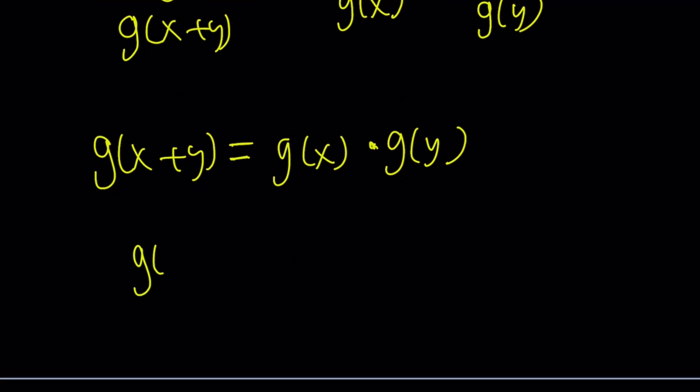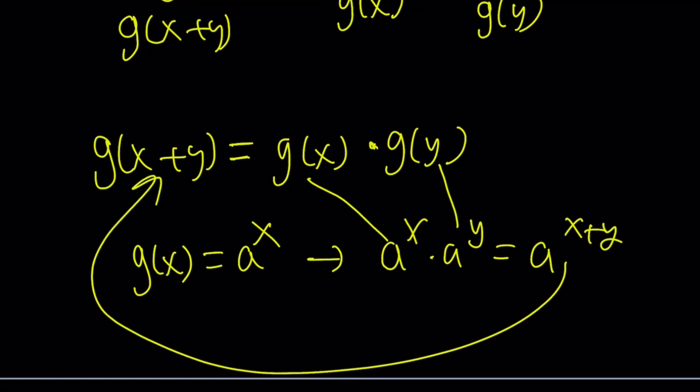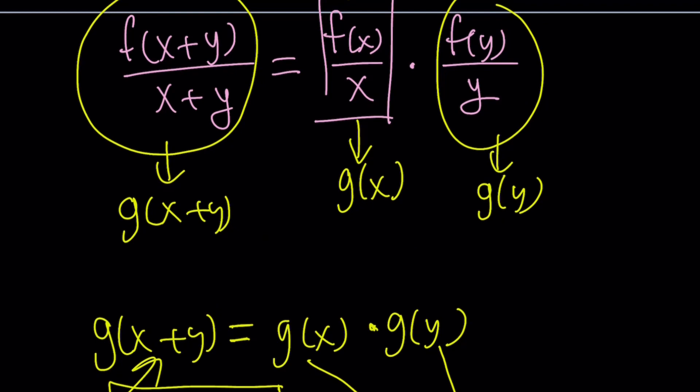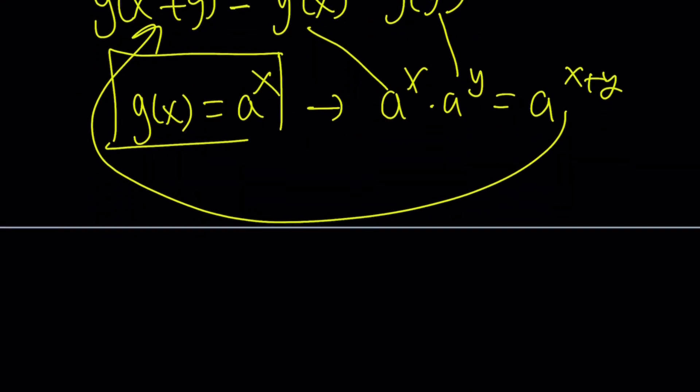What kind of exponential function? Well, I'm just going to call g(x) equals a^x. What happens is, if you multiply a^x times a^y, you get a^(x+y). Which tells you, this is g(x), this is g(y), and this is g(x+y). So this is the function that satisfies it, and guess what? It's equal to f(x) over x, which I was looking for. So g(x) equals a^x, which is equal to f(x) over x.